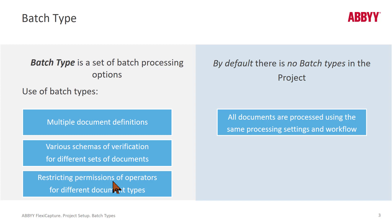By default, there are no batch types in FlexiCapture, and you don't need to create any. Still, a FlexiCapture project has things like workflow properties and preprocessing settings. Where do they get set up? In the Project Setup Station, you click on Project and then go to Project Properties, and you have a variety of settings — workflow settings, preprocessing settings — that you can manipulate and adjust. That's called the default batch type.